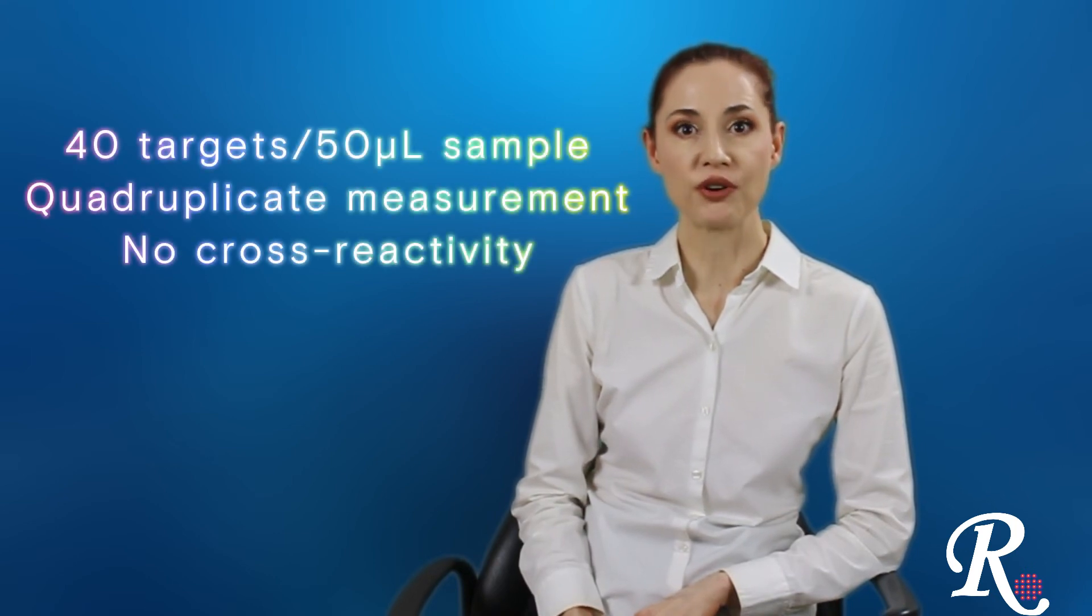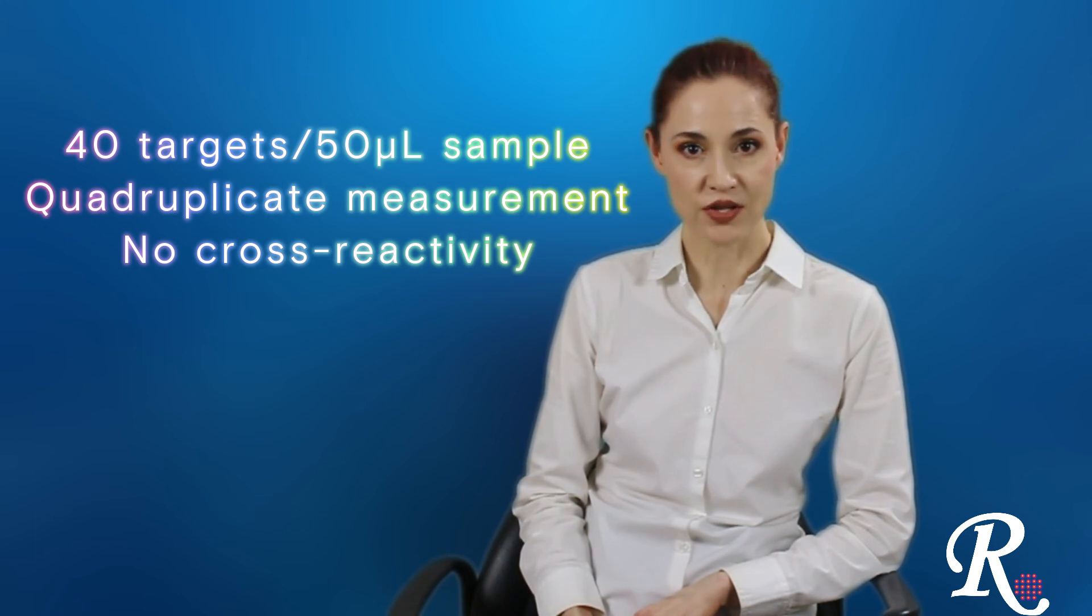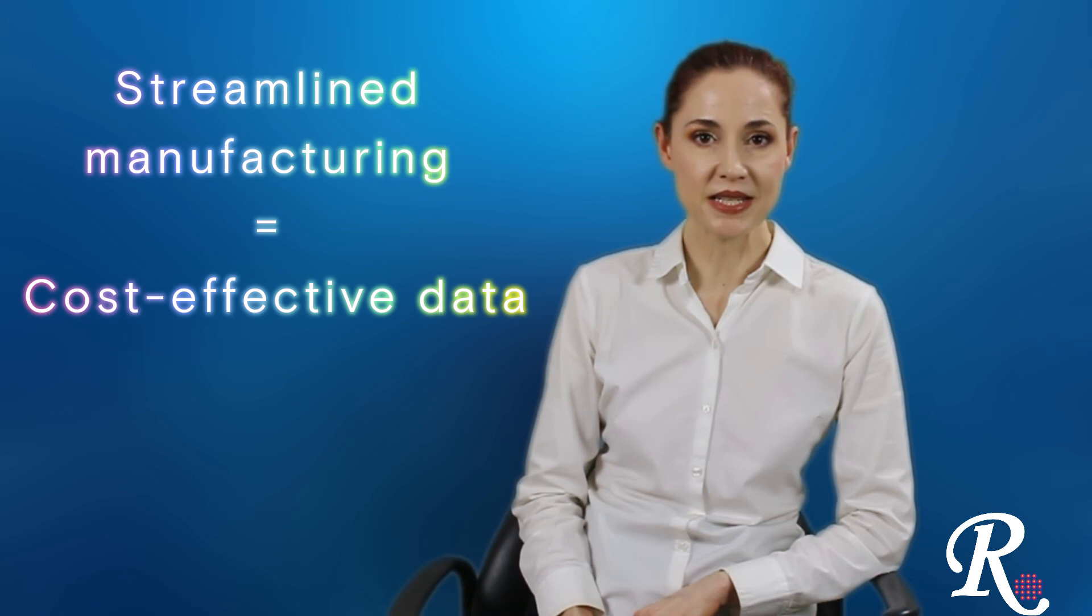In conclusion, with planar glass slide arrays, you get 40 targets per 50 microliters of sample, measured in quadruplicate with low cross-reactivity. And streamlined manufacturing can help get you clean data from your complex study system with a quantitative and cost-effective assay.